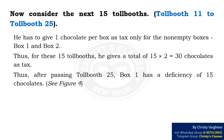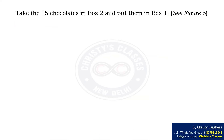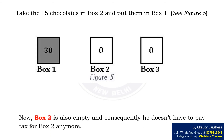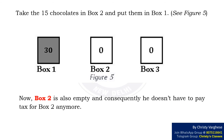Now consider the next 15 tollbooths, that is tollbooth 11 to tollbooth 25. He has to give 1 chocolate per box as toll only for the non-empty boxes, that is box 1 and box 2. Thus, for these 15 tollbooths, he gives a total of 15 × 2, i.e. 30 chocolates as toll. After passing tollbooth 25, box 1 has a deficiency of 15 chocolates, as shown. Now take the 15 chocolates in box 2 and put them in box 1. Box 2 is now also empty and he doesn't have to pay toll for box 2 anymore.